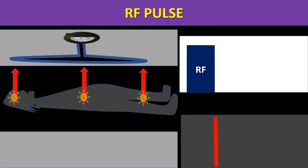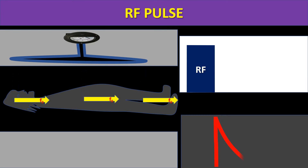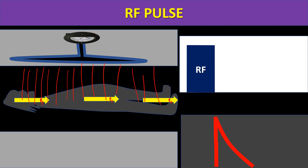Once we give an RF pulse, the magnetic field of the hydrogen ions flips. Once the RF pulse is removed, the magnetic field goes back in the direction of the MRI machine's magnetic field — that's when we cannot measure it. We can only measure it when the magnetic field is perpendicular and facing the RF transmitter. The information we measure is coming from the entire body as a net magnetic signal.